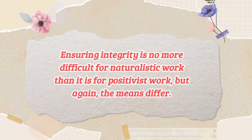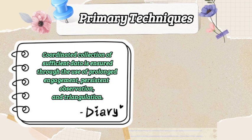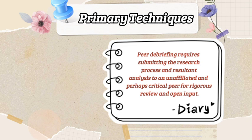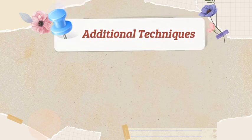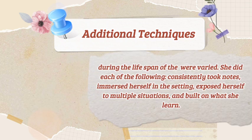Ensuring integrity is no more difficult for naturalistic work than for positivist work, but the means differ. Primary techniques: coordinated collection of sufficient data is ensured through prolonged engagement, persistent observation, and triangulation. Peer debriefing requires submitting the research process and resultant analysis to an unaffiliated and perhaps critical peer for rigorous review and open input. Additional techniques include consistently taking notes, immersing oneself in the setting, exposing oneself to multiple situations, and building on what was learned.